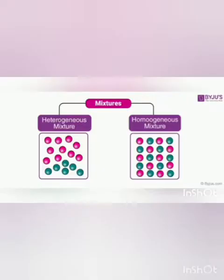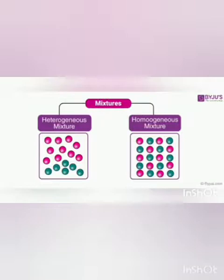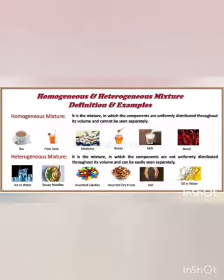Mixtures are further divided into two types: heterogeneous mixture and homogeneous mixture. In a heterogeneous mixture, the atoms of two different substances, represented by different colors pink and green, are randomly distributed. But in a homogeneous mixture, atoms of two different substances are uniformly distributed throughout the mixture.